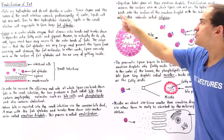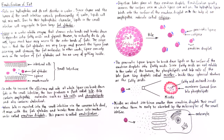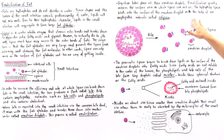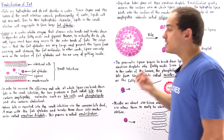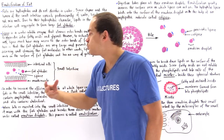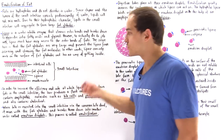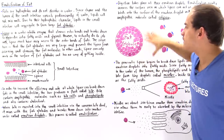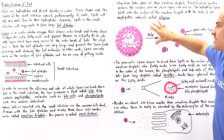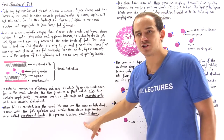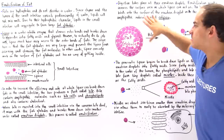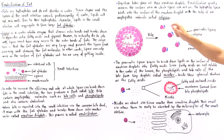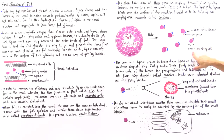Emulsification greatly increases the surface area on which lipase can act, and digestion begins on the surface of these emulsion droplets. So this fat globule, when mixed with bile, undergoes emulsification and is broken down into individual molecules we call emulsion droplets. This increases the efficiency and rate at which lipase molecules can cleave those ester bonds.